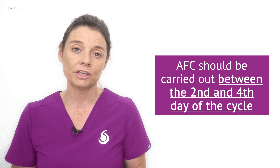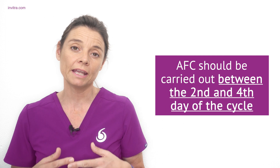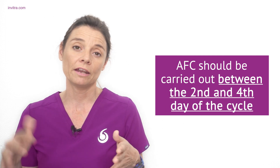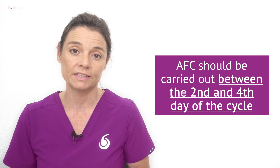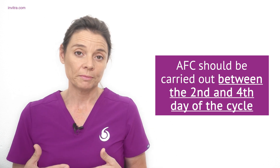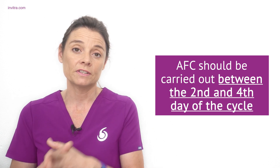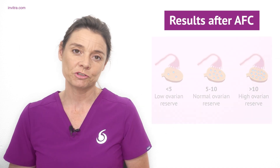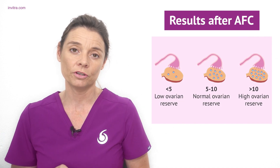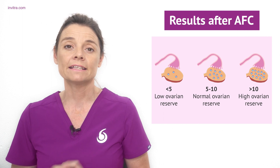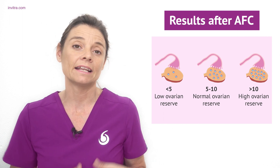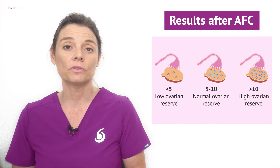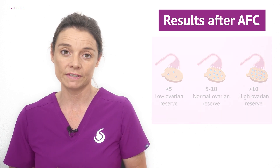In order for this test to be accurate it should be carried out between days two and four of the menstrual cycle, when the antral follicles should be visible. Day one of the menstrual cycle is counted as the first day of your menstrual period. If the specialist counts between five and ten antral follicles in each ovary the test is deemed normal. Less than this indicates a low ovarian reserve, and more than this would indicate a high ovarian reserve.